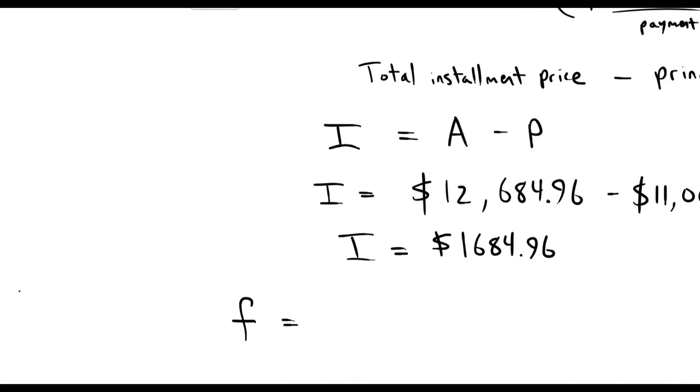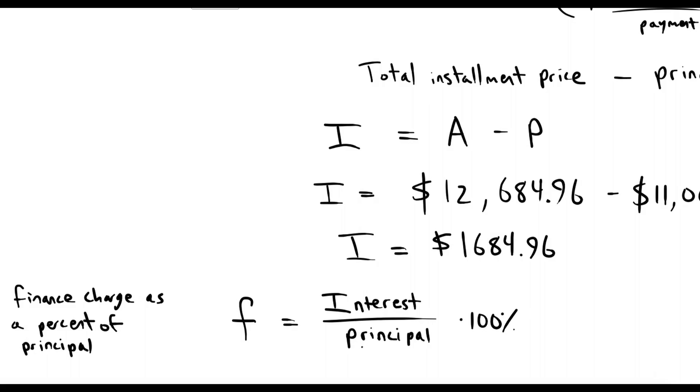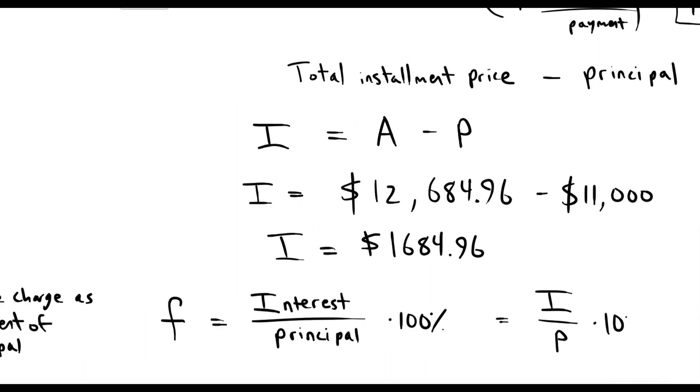So the finance charge as a percent of principal is found by dividing that interest by the principal. And then you could multiply it by 100 in order to turn it into a percent. So it's I over P times 100.